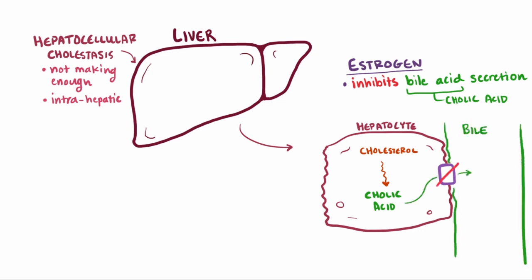In this case the hepatocytes literally can't pump out the cholic acid, because estrogen inhibits the export pump that usually moves the bile acid from the hepatocyte to the bile canaliculi, which leads to the bile ductules and eventually the common hepatic duct.